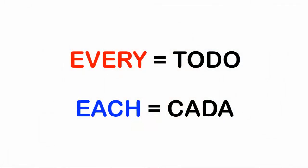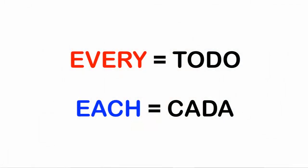One tip, un consejillo. You can think of 'every' como 'todo' y 'each' como 'cada'. Piensa que 'each' es 'cada' y 'every' es 'todo', aunque no siempre sea así porque se puede traducir como 'cada', pero eso es para que en la cabeza te sea más fácil recordarlo.